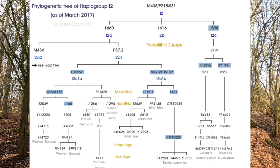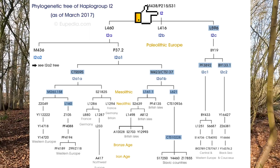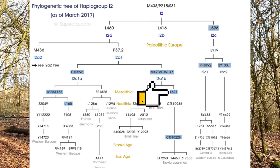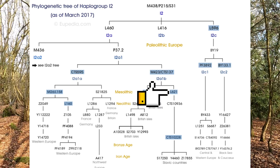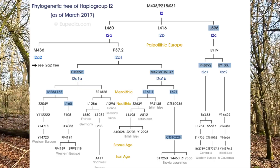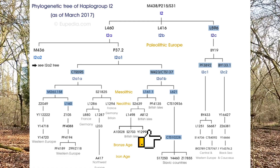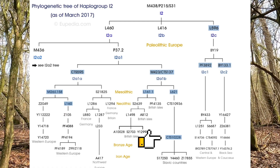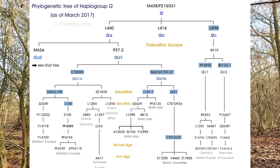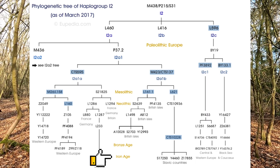The following chart shows the phylogenetic tree of Haplogroup I2. You will see on the chart that Haplogroup L621 falls within the Mesolithic period, and as we follow that lineage down, you will see that S17250 is one of the subclades that belong to CTS10228. S17250 is a Slavic haplogroup that broke away during the Iron Age period.